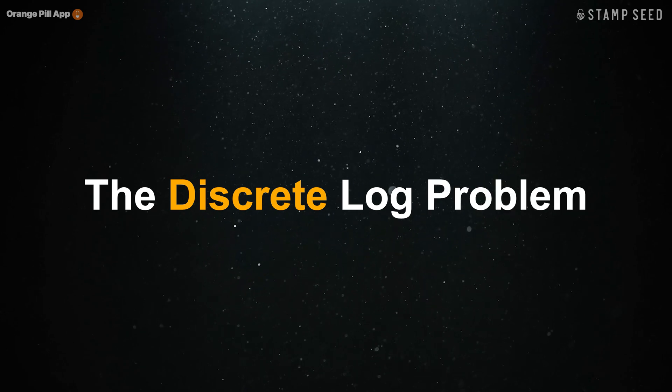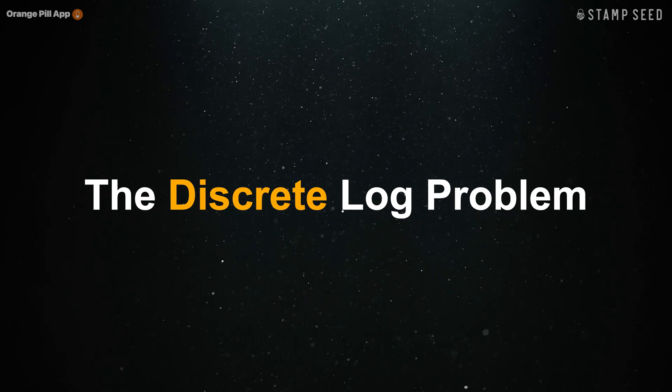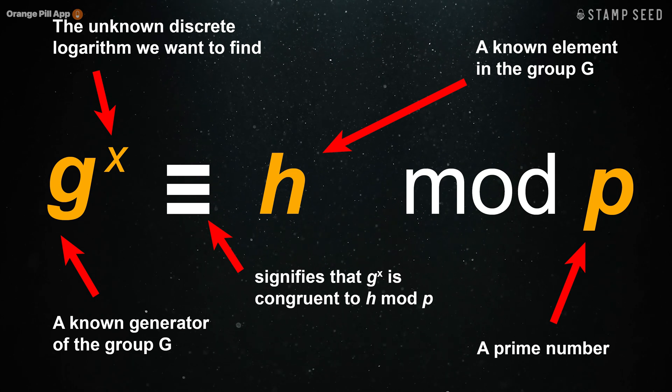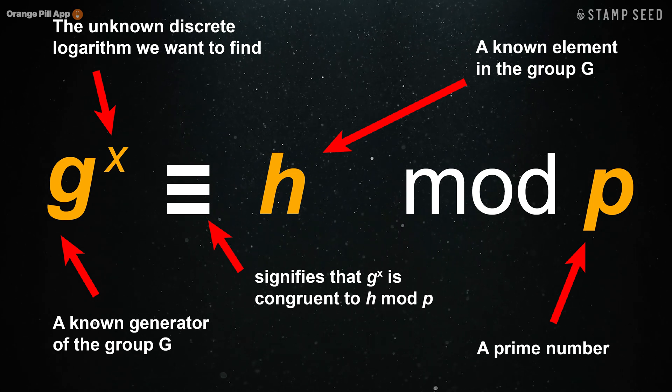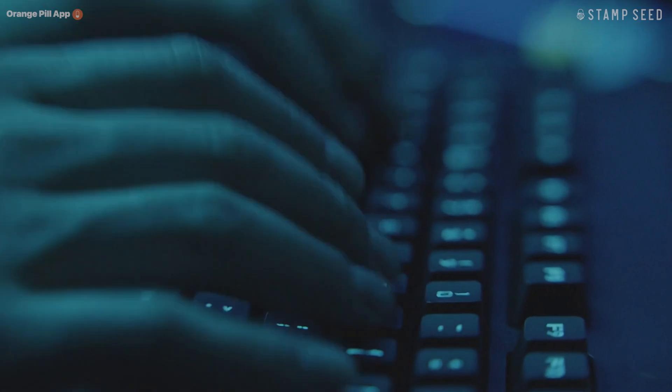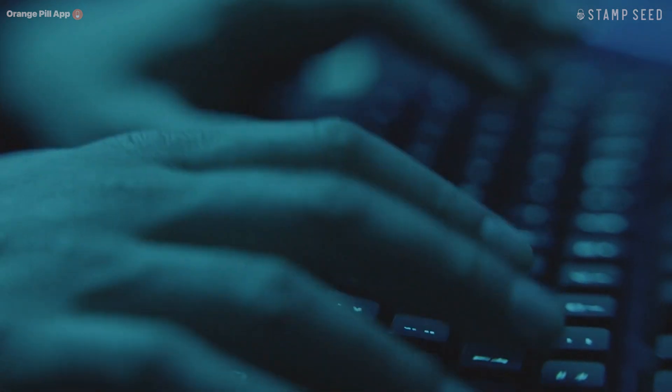One of the most fundamental aspects to understand of why Bitcoin is so secure is to understand how secure cryptography is in and of itself. This section is called the discrete log problem, and this is the problem that enables us to use math to secure cryptography. The discrete log problem is a mathematical problem that is yet to be solved. It is the foundation of public key cryptography, which allows people to send information over insecure channels without worry that it could be decrypted.